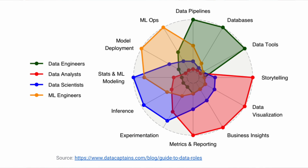There's a really cool diagram on datacaptains.com — the source will be in the description below. It highlights the differences between all the different data profiles. Data scientists, highlighted in blue, need to be proficient in stats, machine learning modeling, inference, experimentation, metrics, and reporting — which is close to data analysts who are also strong in metrics, reporting, a bit of experimentation, and business insights. ML engineers, by comparison, are more proficient in MLOps, model deployment, stats, machine learning modeling, and some data pipeline work.